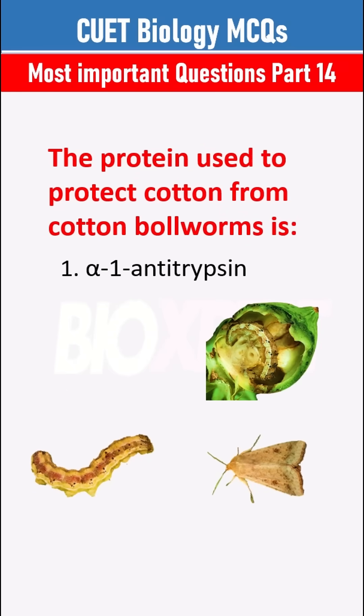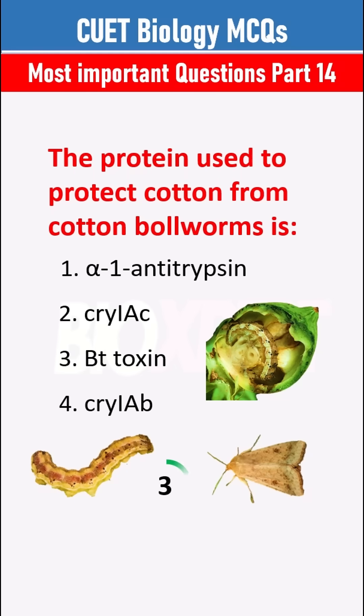The protein used to protect cotton from cotton bollworms is Cry 1AC.